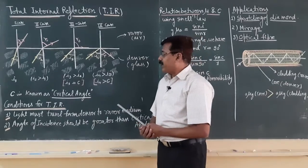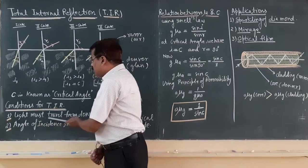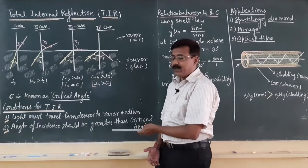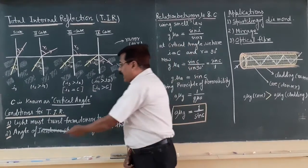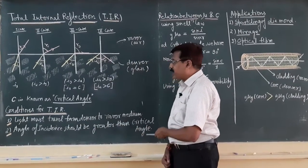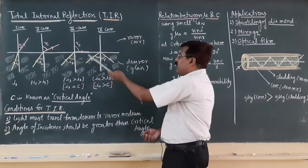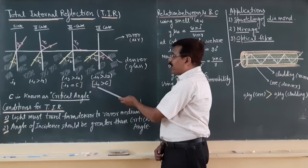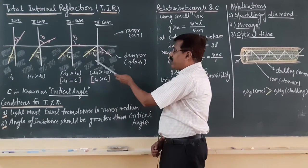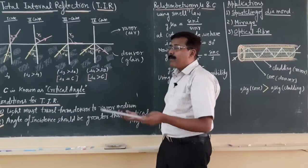There are two essential conditions. The first: light must travel from denser to rarer medium. The second: the angle of incidence should be greater than the critical angle. Both these conditions are clearly visible in the fourth case, where the angle of incidence is greater than the critical angle and the light ray traveling from denser to rarer medium reflects back.